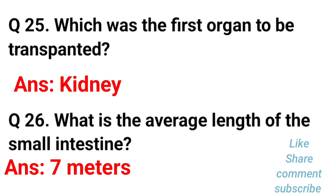Which was the first organ to be transplanted? The answer is the kidney. What is the average length of the small intestine? The average length of the small intestine is 7 meters.